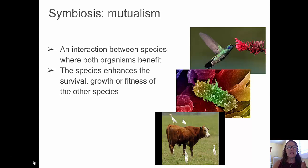Mutualism is an interaction between species where both of the organisms benefit. Each species enhances the survival, growth, or fitness of the other species that it's interacting with.